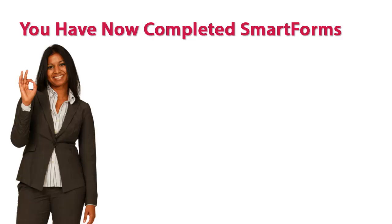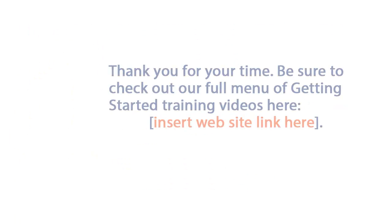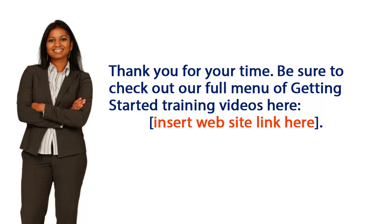You have now completed Smart Forms. You have created a record for your proposal that will follow the project through its life cycle. You have also populated UGA internal routing forms and provided information for the SF-424 where needed. Thank you for your time. Be sure to check out our full menu of getting started training videos.